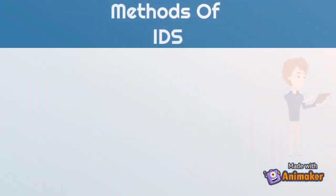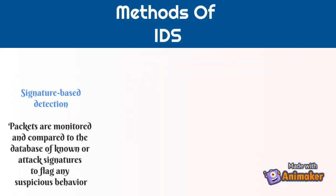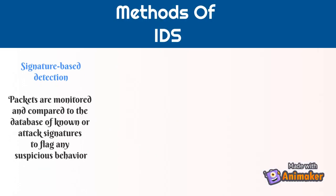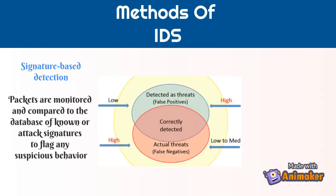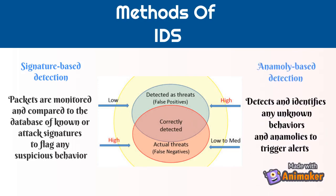Methods of IDS: Signature-based detection — packets are monitored and compared to a database of known attack signatures to flag any suspicious behavior. Anomaly-based detection — detects and identifies any unknown behaviors and anomalies to trigger alerts.